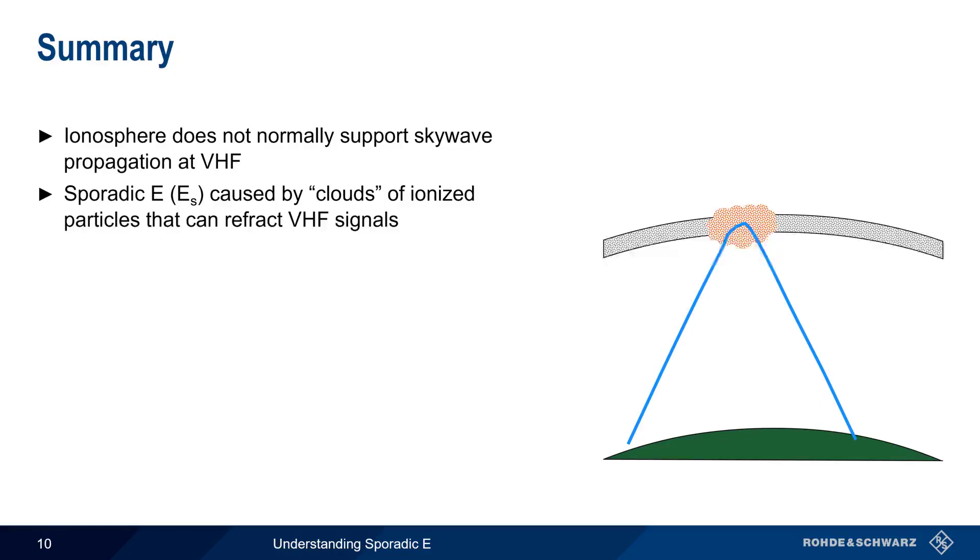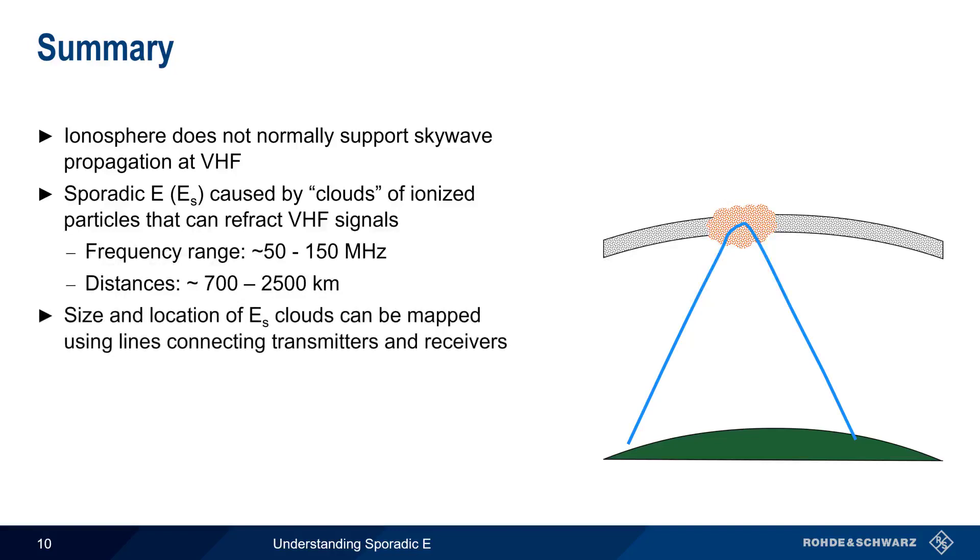Generally speaking, sporadic E is only seen at frequencies from about 50 to 150 megahertz, and achievable distances using sporadic E are on the order of 700 to 2500 kilometers. The size and location of sporadic E clouds can be approximately mapped by plotting lines connecting transmitters and receivers, and then looking at their intersection.